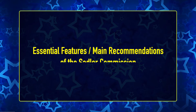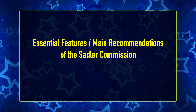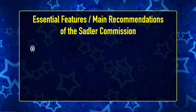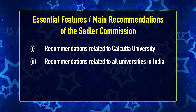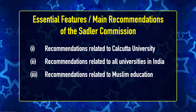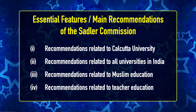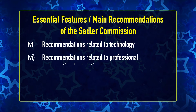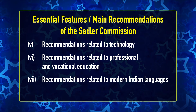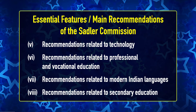The essential features or main recommendations of the Sadler Commission can be studied under the following headings: first, recommendations related to Calcutta University; second, recommendations related to all universities in India; third, recommendations related to Muslim education; fourth, recommendations related to teacher education; fifth, recommendations related to technology; sixth, recommendations related to professional and vocational education; seventh, recommendations related to modern Indian languages; and eighth, recommendations related to secondary education.